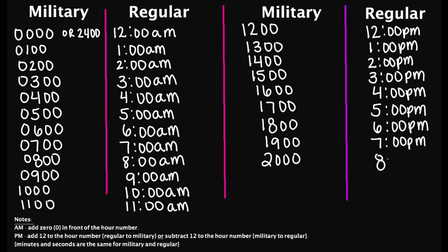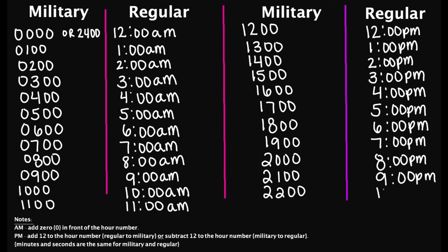2000 hours is 8 p.m. Then we have 2100 hours — this is 9 p.m. 2200 hours is 10 p.m. And then we have 2300 hours — this is 11 p.m.